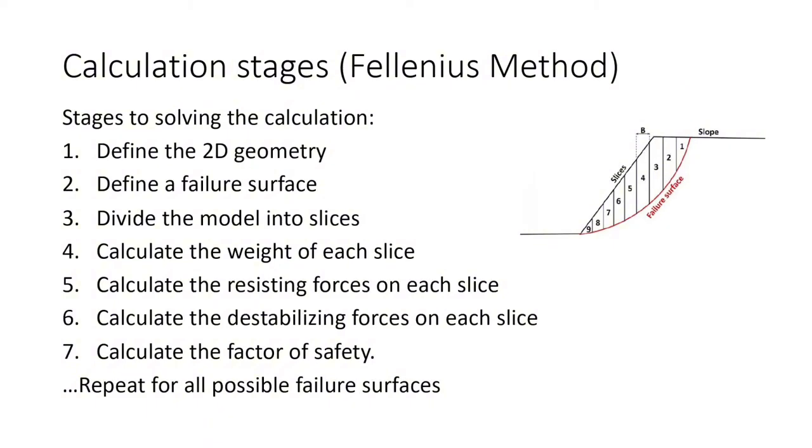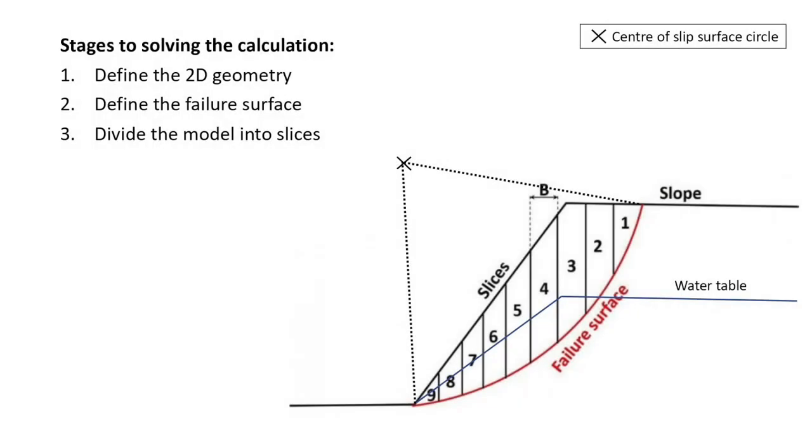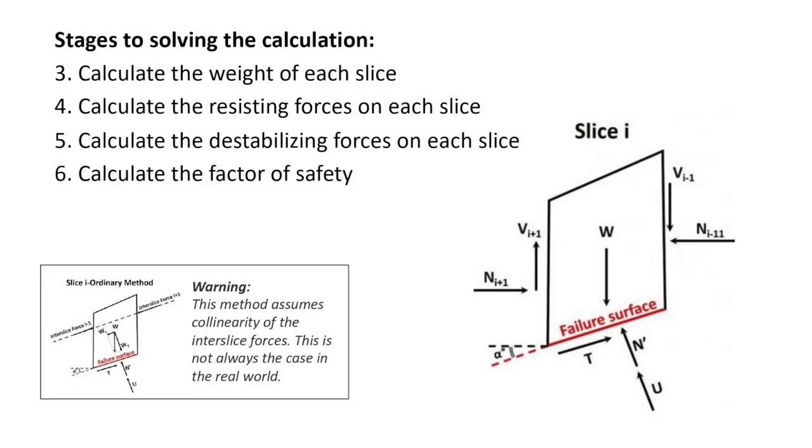Let's look at stages one to three. After defining the 2D geometry and water table level, we assume a circular failure surface through the slope. Now we can define the center of this failure slope and radius at an arbitrary location. We then divide the slope within the bounds of the failure surface into a number of slices, the more the better.